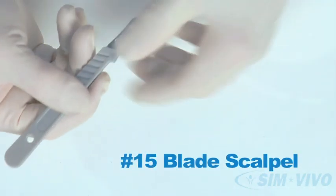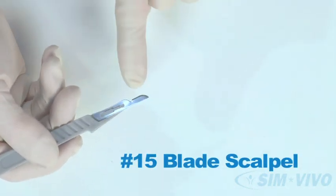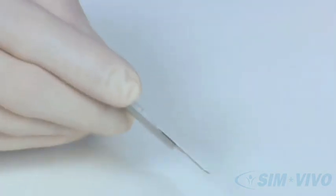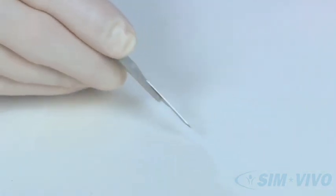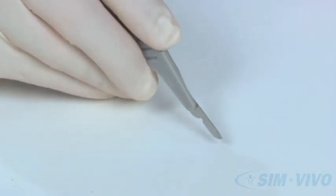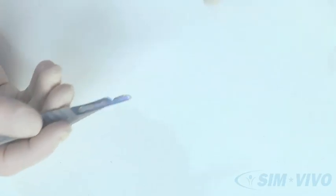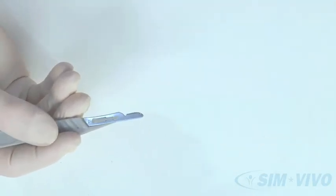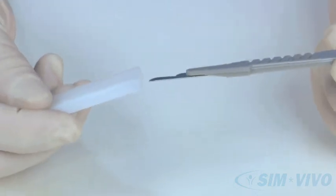The smaller blade is a number 15 blade and is used for fine cuts during excisions. This scalpel is usually held like a pencil for more precise movements. The cutting surface is the rounded part of the blade near the tip. Always put the cover on the scalpel after using.